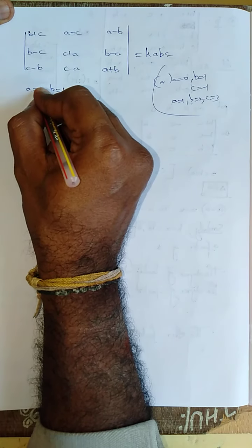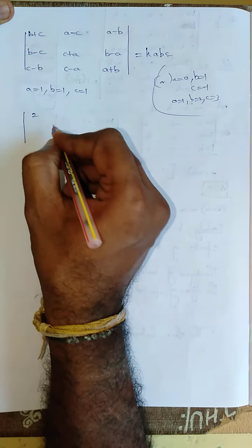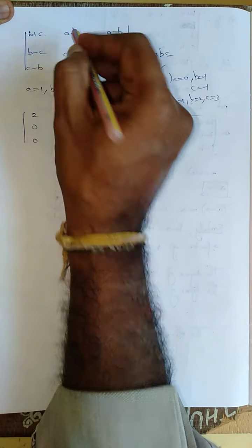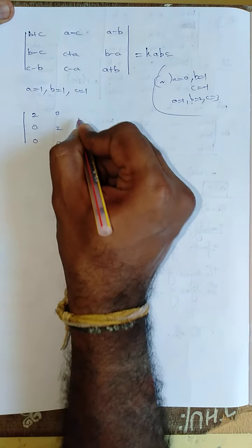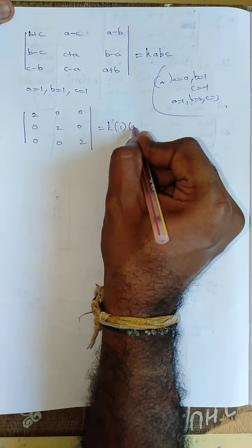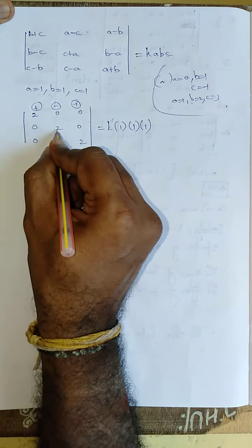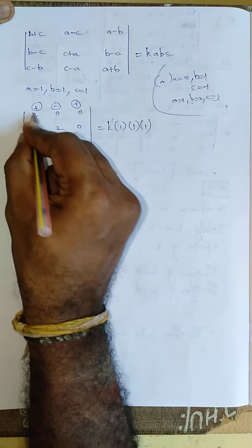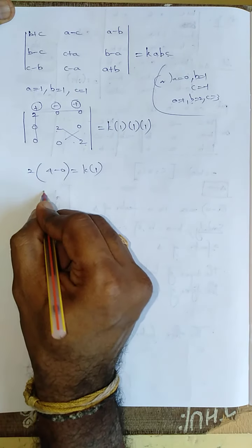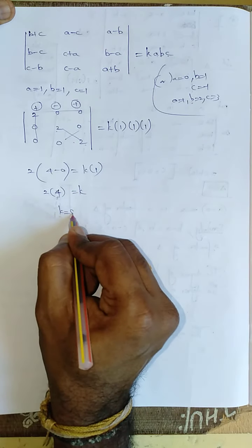Apply a=1, b=1, c=1. Then (b+c)=2, (b-c)=0, (c-b)=0, (a-c)=0, (c+a)=2, (c-a)=0, (a-b)=0, (b-a)=0, (a+b)=2. Evaluating: 2 times 2 times 2 minus the zero terms gives 4 = k into 1 into 1 into 1, so k equals 8.